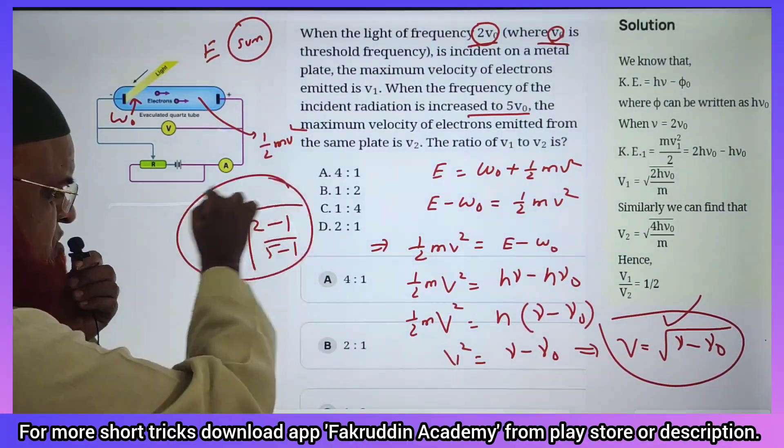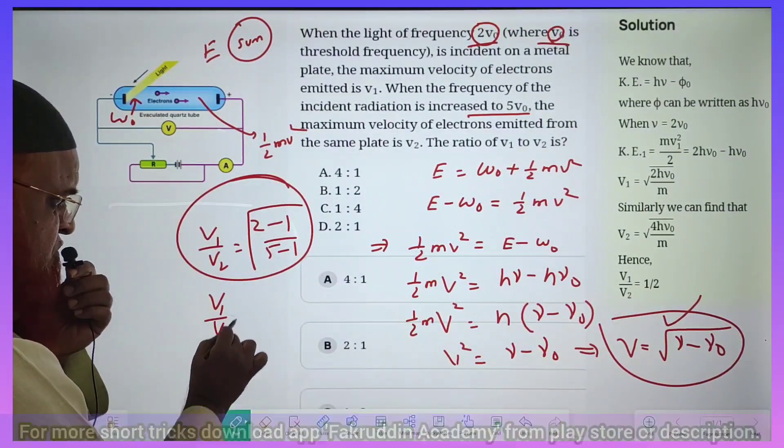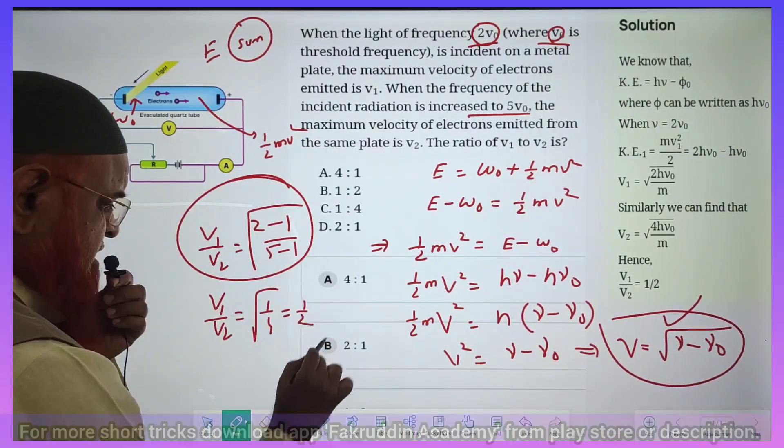So therefore, in a single step you can solve this problem: V₁ by V₂ is equal to square root of 1 by 4. Your answer is 1 by 2. That's it.